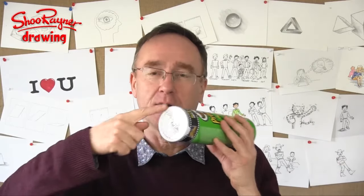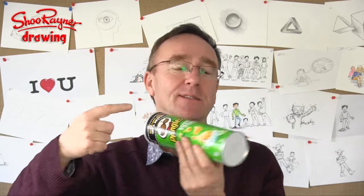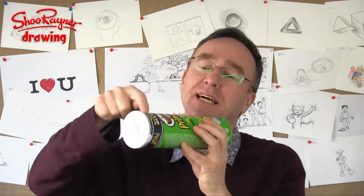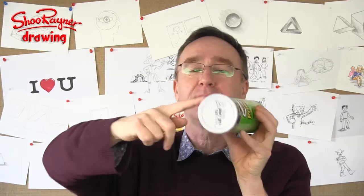Very simply, a cylinder has a circle at one end and a circle at the other, and they're joined together by millions and millions of lines.